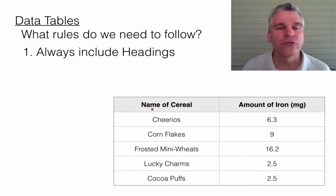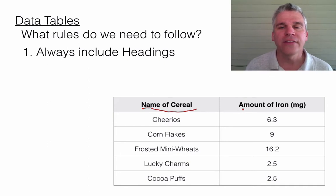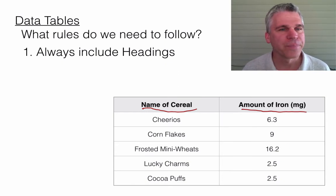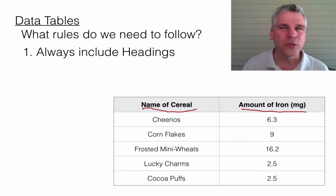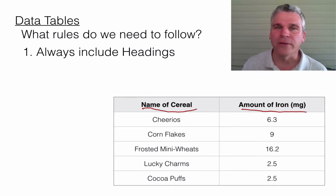For instance, we have two headings. We have the name of some popular cereals like Cheerios, Corn Flakes, Frosted Mini Wheats, Lucky Charms, and Cocoa Puffs. And the other column tells us how much iron in milligrams is present in each. So we can get a couple of things immediately from this information. This was probably an experiment that looked at which types of cereals contain the most amount of iron.